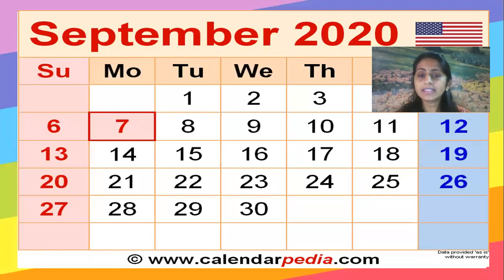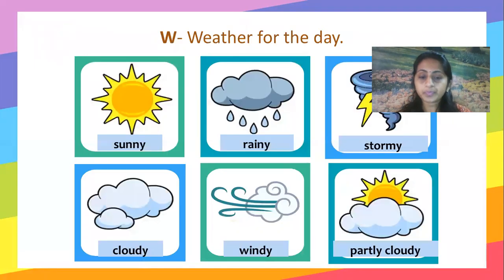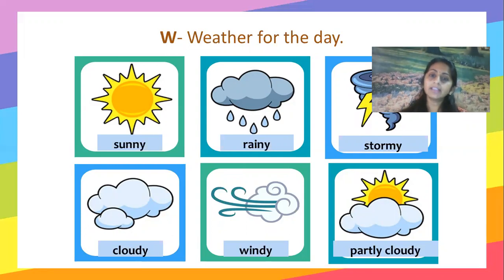So next, you can see the month of September on the screen. Which month is going on? It is September and the year is 2020. Let's go for the weather for the day. How is the weather today? See outside the window and tell your parents about the weather. What types of clothes do you wear in this type of season?